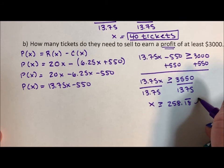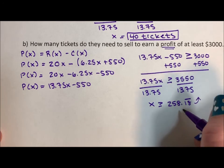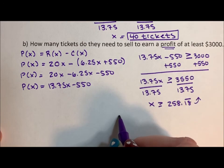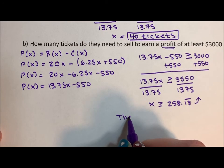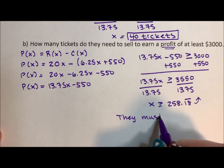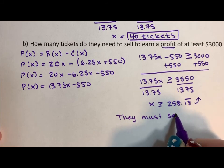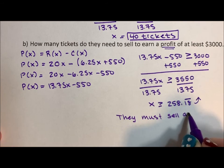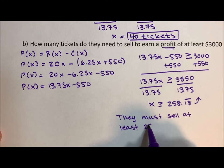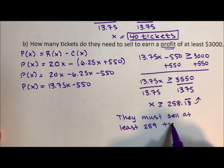So they have to round up, because if they go down to 258 tickets they're not going to make the profit they're hoping for. So they must sell at least 259 tickets.